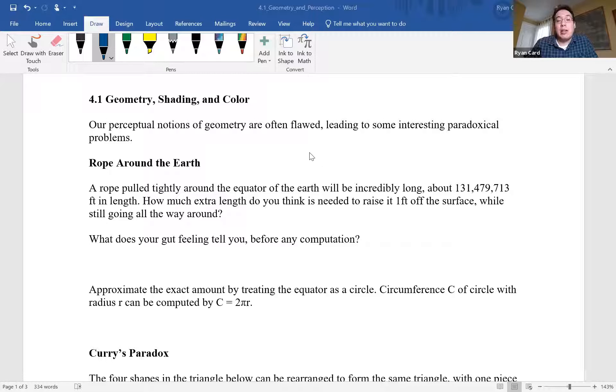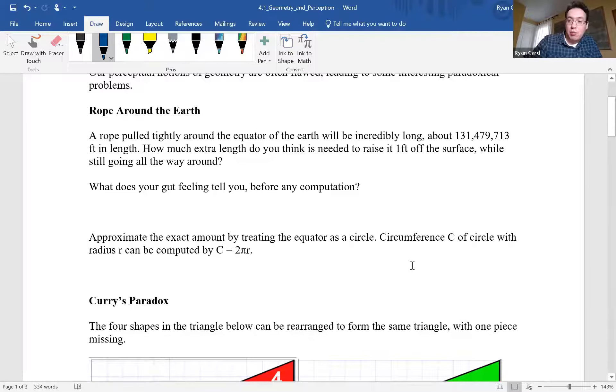The question asks, how much extra length of rope do you need to take that rope and lift it one foot off the ground all the way around the Earth while still going around? First write down what you think the gut feeling is. What's about how much more rope do you think you'll need? You can write down that here. Let's now go off our gut feelings and use mathematical formulas to actually compute it.